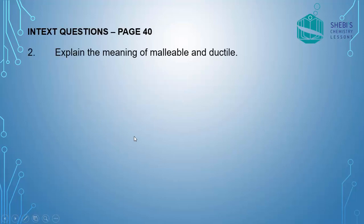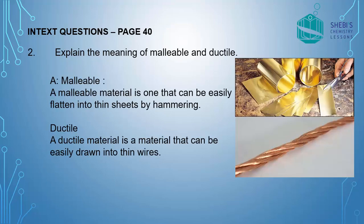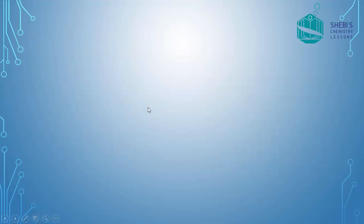Moving to the second question from the same page. Explain the meaning of malleable and ductile. Malleable material is the ability of a substance to become thin sheets when hammered. You can see in the picture gold is made into very thin sheets. Ductile material is a material that can be easily drawn into thin wires. See here copper is made into very thin wires. So metals are highly malleable and ductile.